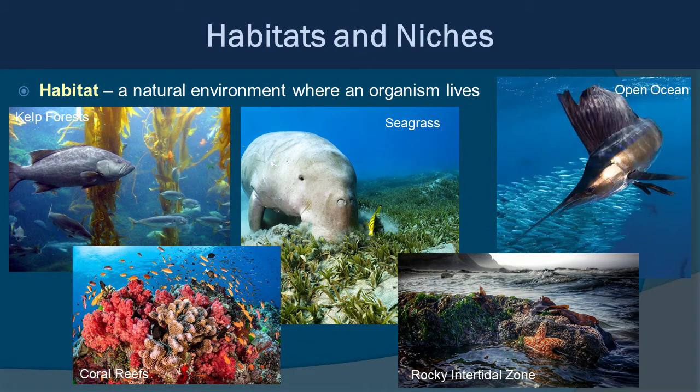A habitat is a natural environment where an organism lives, and the ocean has plenty of different types of habitats. Here are some examples: a kelp forest out in the Pacific Northwest, coral reefs in the tropical regions of the world, seagrass beds with a manatee munching away, rocky intertidal zones found in areas with rock-based shorelines, and open oceans with a sailfish swimming through. All of these are habitats we'll be learning more about this year.